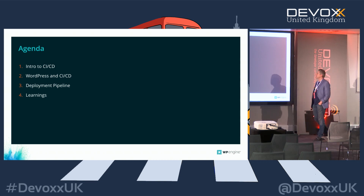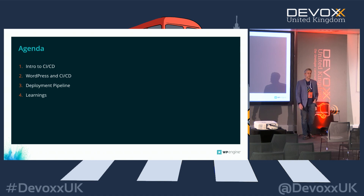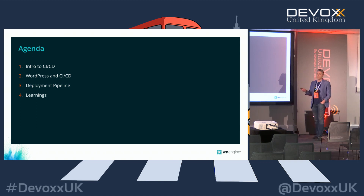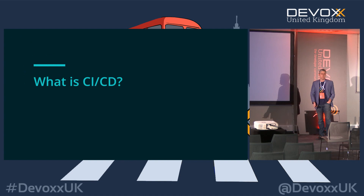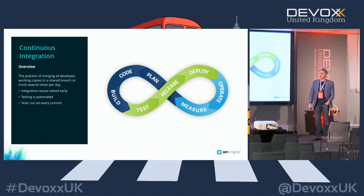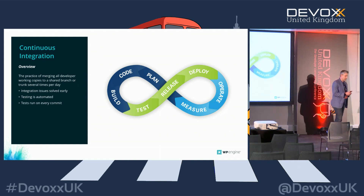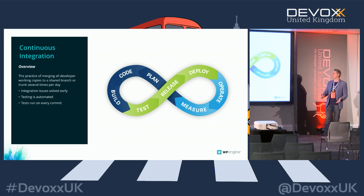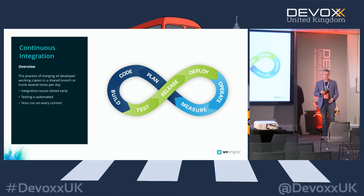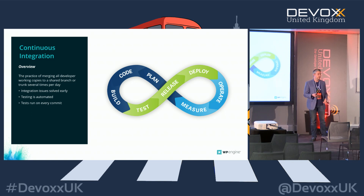We're going to talk a little bit about CI/CD in our very short time slot. We'll talk about how WordPress and CI/CD can work together. I'll look at a deployment pipeline that I built and hopefully we'll get into some of the things I learned. What is CI/CD? Continuous integration is a very modern approach to development. If you think back to the days where you had a software version released on a physical medium like a CD, you would do a release every six months or a year if it was large software.